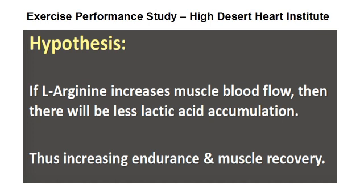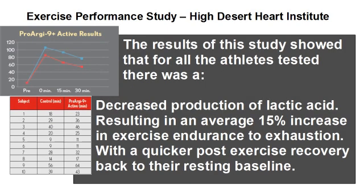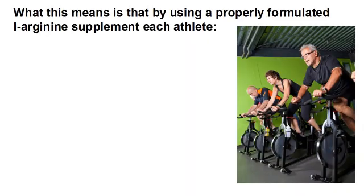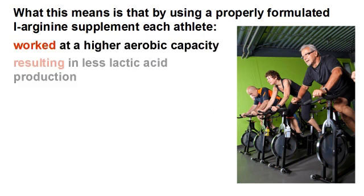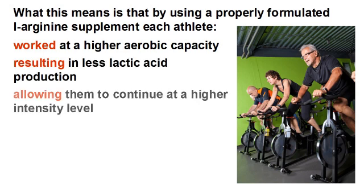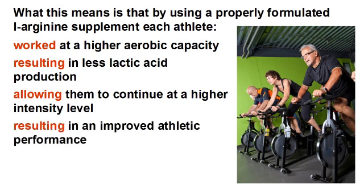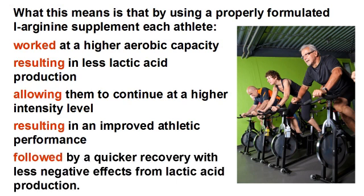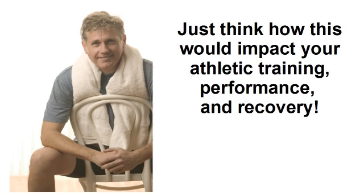This was the working hypothesis for an exercise performance study using the L-arginine pathway for the creation of nitric oxide. Their hypothesis was: if L-arginine increases muscle blood flow, then there will be less lactic acid accumulation, thus increasing endurance and muscle recovery. The results of this study showed that for all the athletes tested, there was a decreased production of lactic acid, resulting in an average 15% increase in exercise endurance to exhaustion, with a quicker post-exercise recovery back to their resting baseline. What this means is that by using a properly formulated L-arginine supplement, each athlete worked at a higher aerobic capacity, resulting in less lactic acid production, allowing them to continue at a higher intensity level, resulting in improved athletic performance followed by a quicker recovery with less negative effects from lactic acid production.